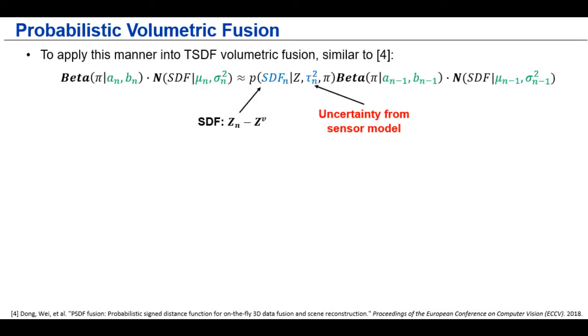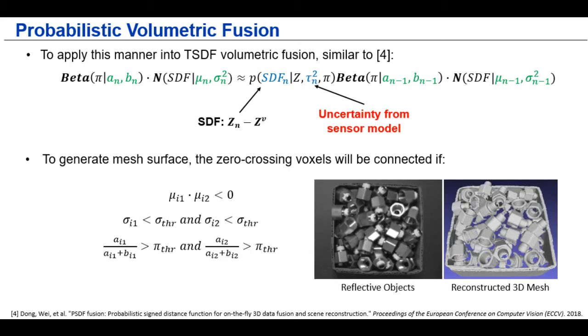And for our volumetric fusion, we use a similar strategy. We maintain these four parameters for each 3D voxel. And when a new frame comes, we compute the signed-distance function with the associated photometric and geometric uncertainties for the incrementally updating. And finally, to reconstruct the mesh surface, we only connect the zero crossings when the voxel has small uncertainty and its inlier probability is large enough.